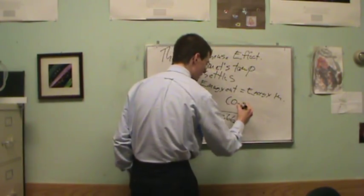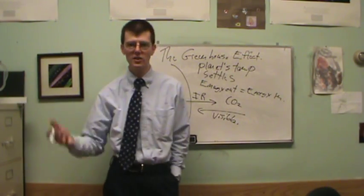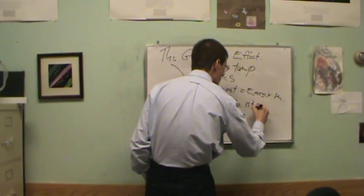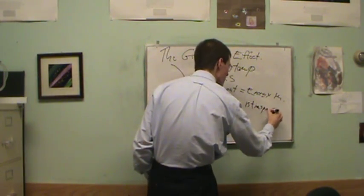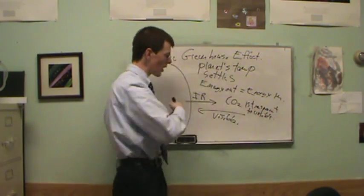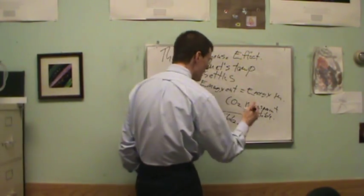Carbon dioxide is pretty much perfectly transparent to visible light. So you can fill a room with carbon dioxide, and you can see right through it, no problem. So carbon dioxide is transparent to visible. So what that means is the sun's radiation goes right through it, right down to the surface, no problem, no harm, no foul.